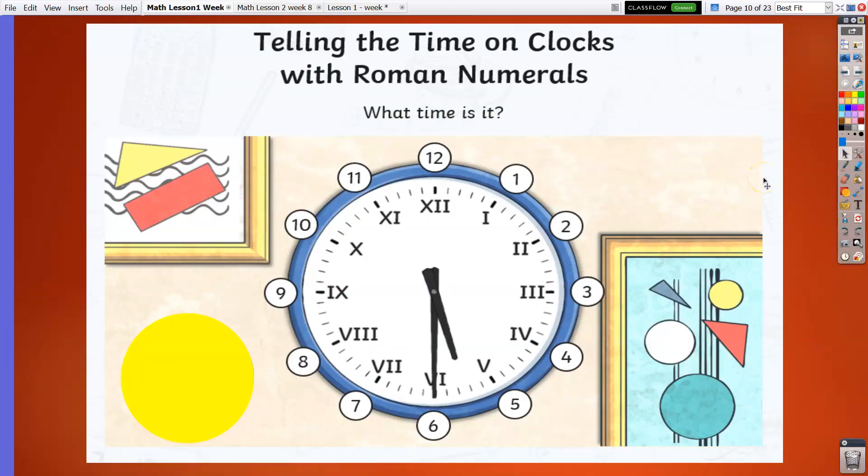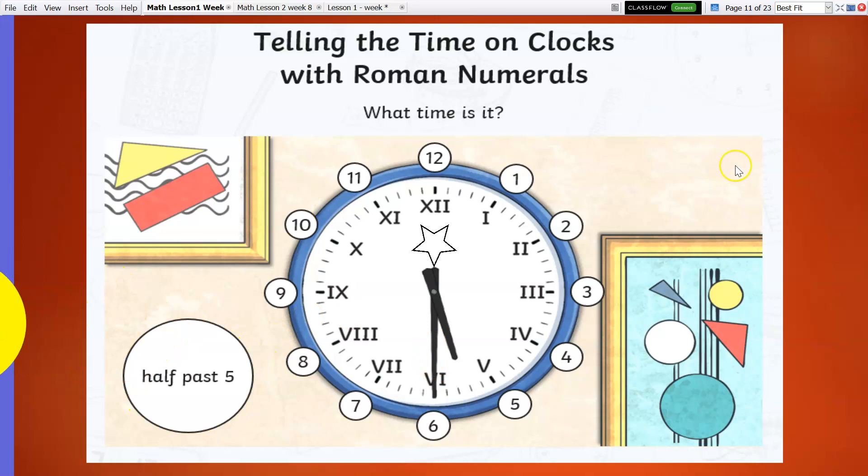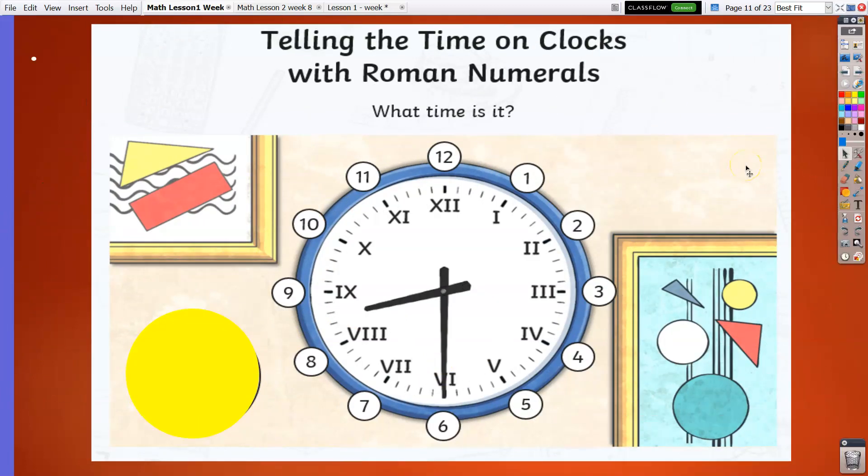What time is it? Now we have learned about the past side and the to side, so it is still on the past side. We have half past, and what is the hour? Five. So it is half past five. What time is it? Again, it is in the half past time, and what is the hour? It's eight. So half past eight.